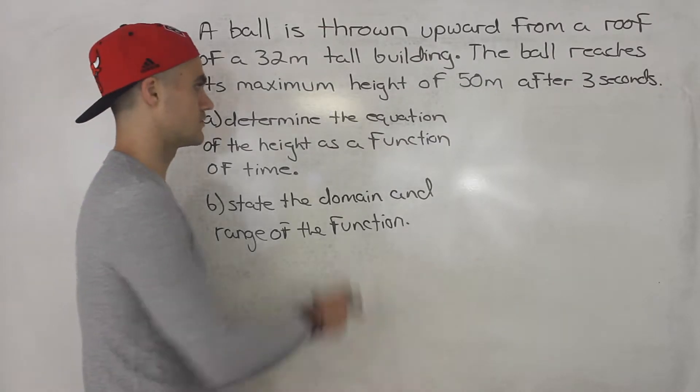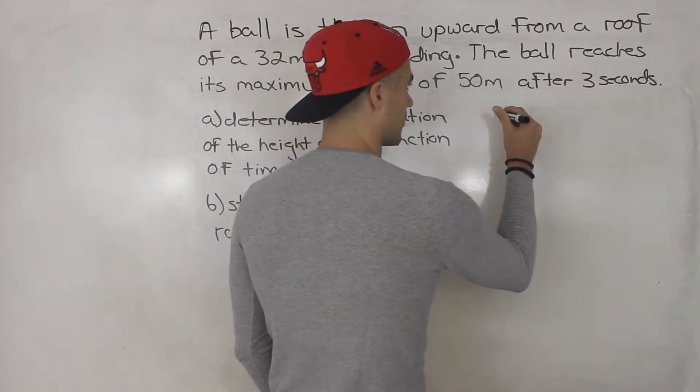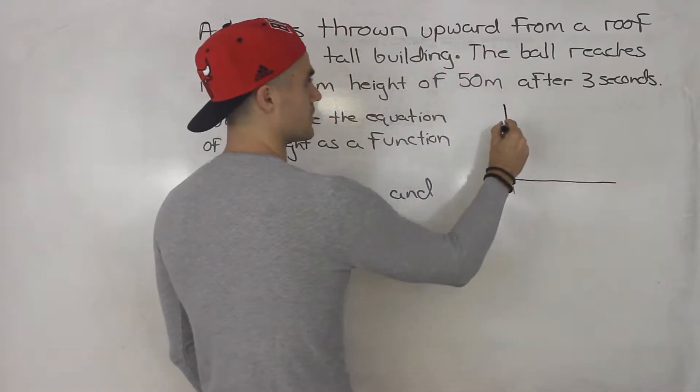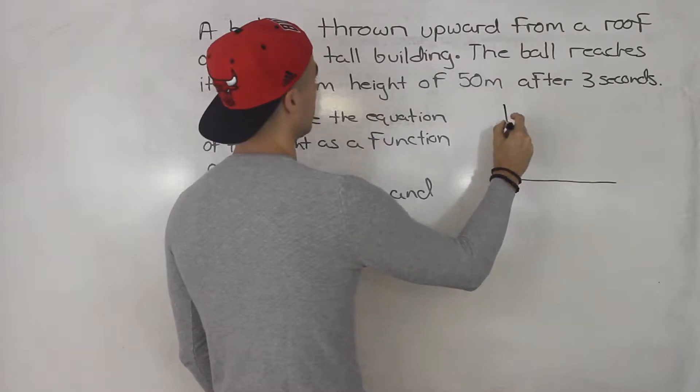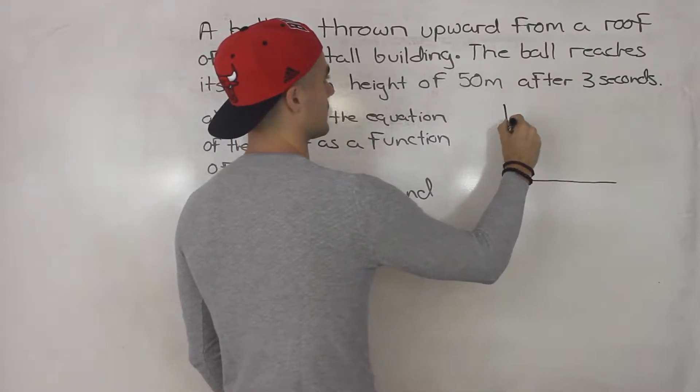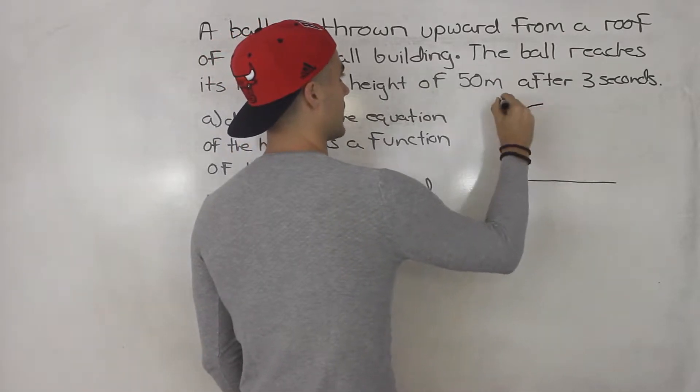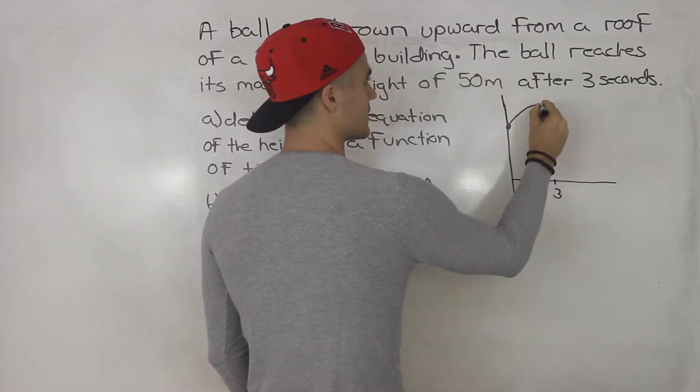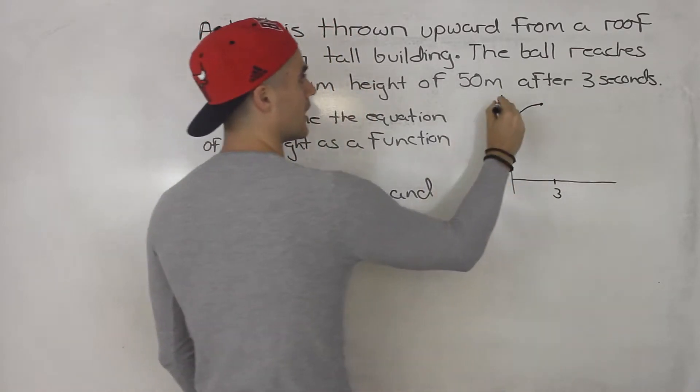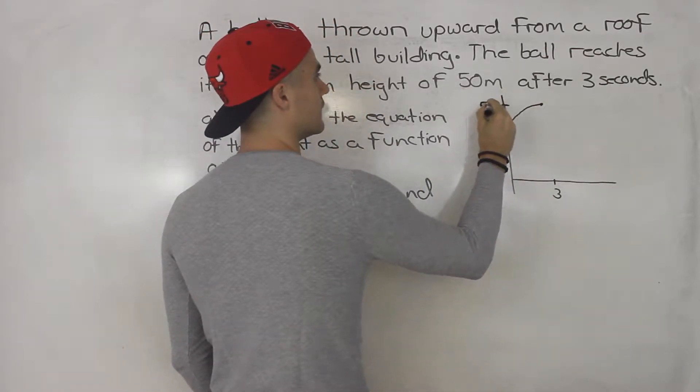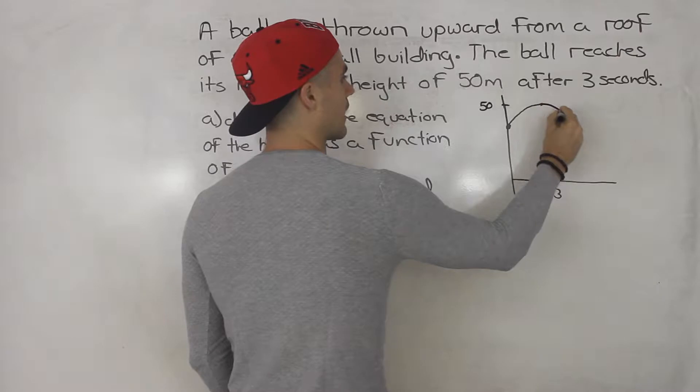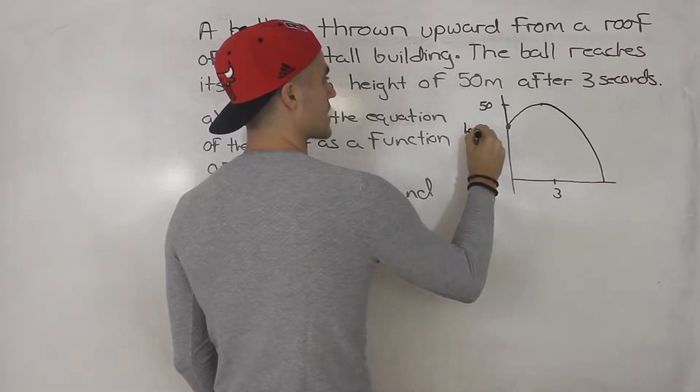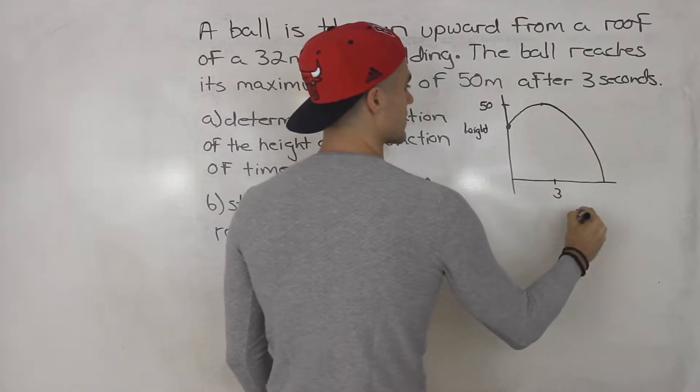So to find the equation in part A, let's first start off with a diagram to see what's happening. So we're throwing a ball off a building and then at three seconds, it's reaching a max height of 50. And then the ball is going to hit the ground.